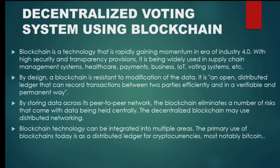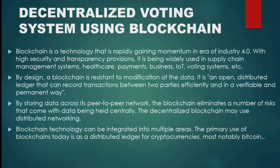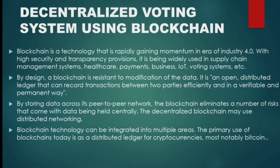By design, a blockchain is resistant to modification of the data. It is an open, distributed ledger that can record transactions between two parties efficiently and in a verifiable and permanent way. By storing data across its peer-to-peer network, the blockchain eliminates a number of risks that come with data being held centrally.